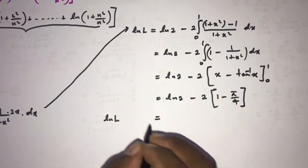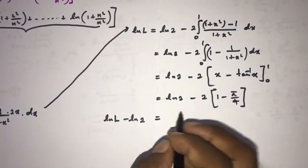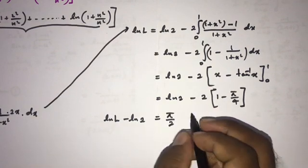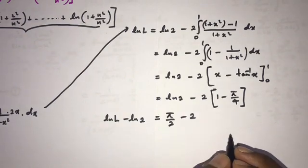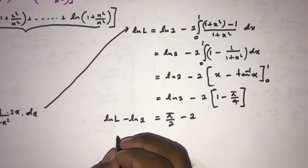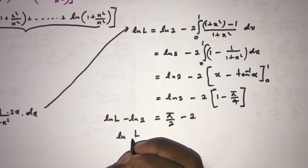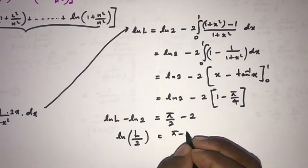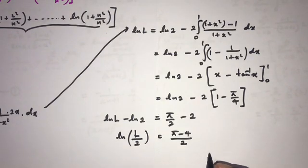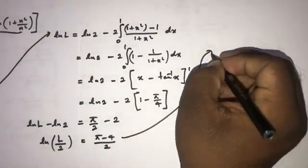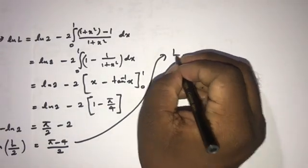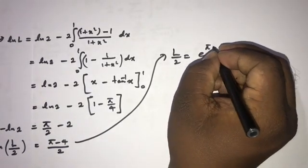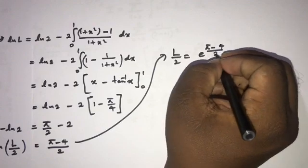Evaluating, the integral of 1 is x and the integral of 1/(1 + x²) is arctan(x). So natural log of L minus natural log(2) equals −2 times [x − arctan(x)] from 0 to 1, which gives π/4, so natural log(L/2) = (π − 4)/2. Therefore L/2 = e^((π−4)/2).